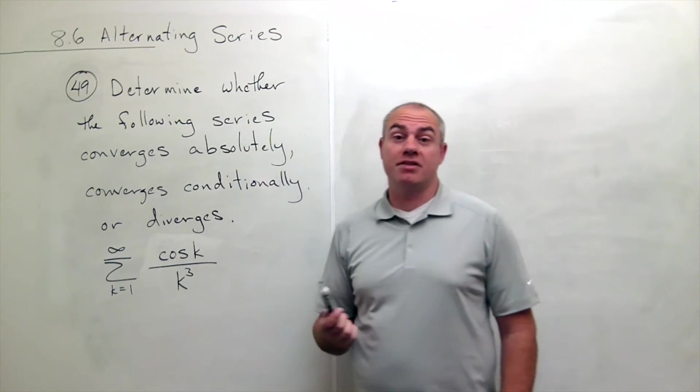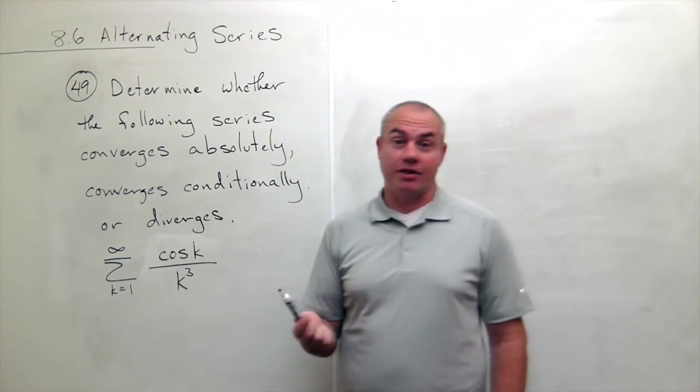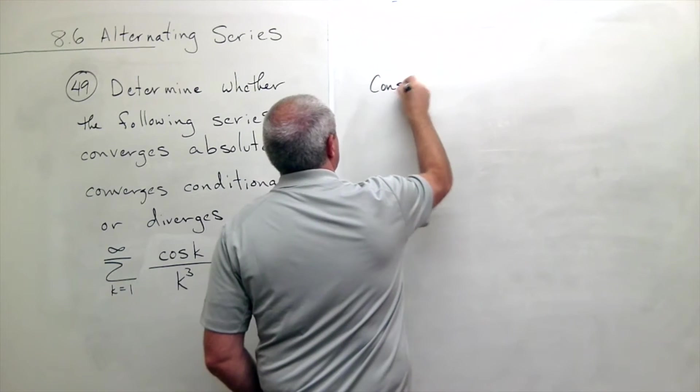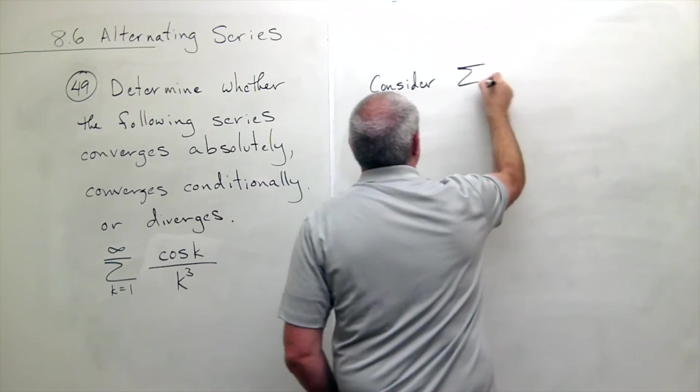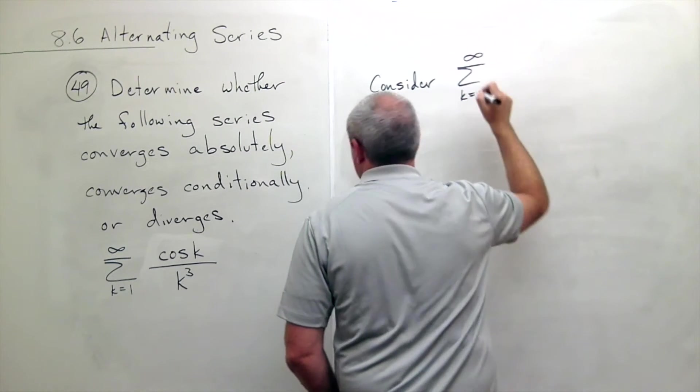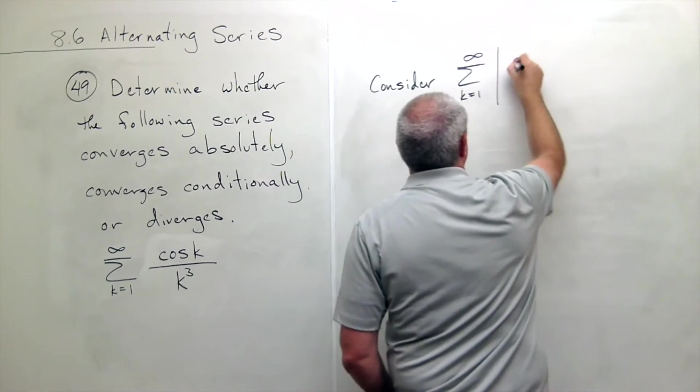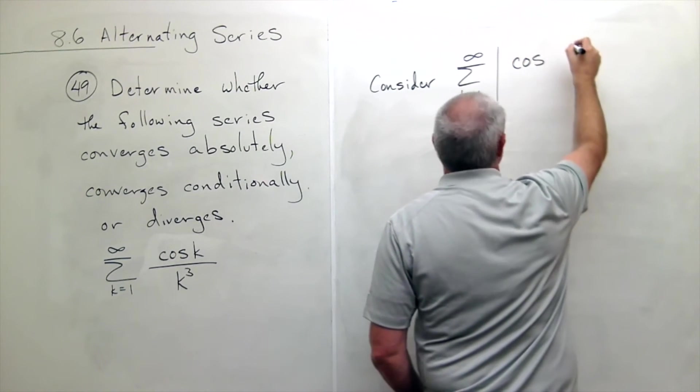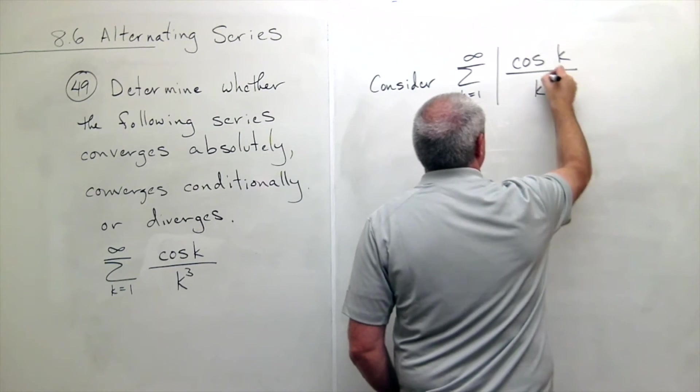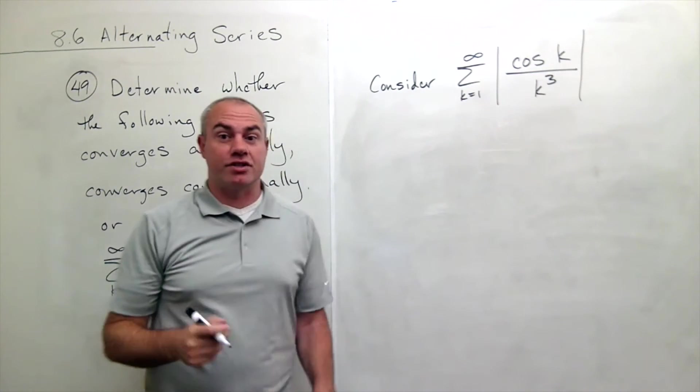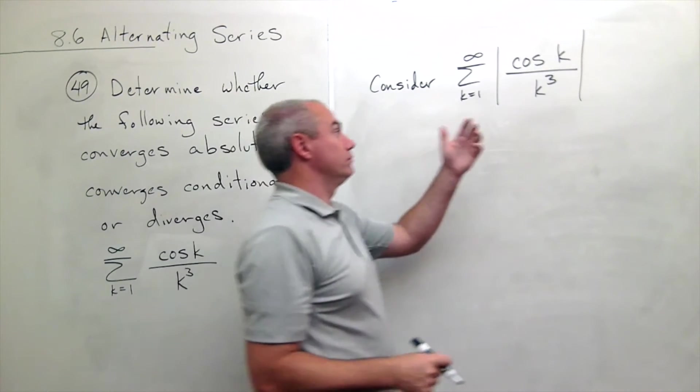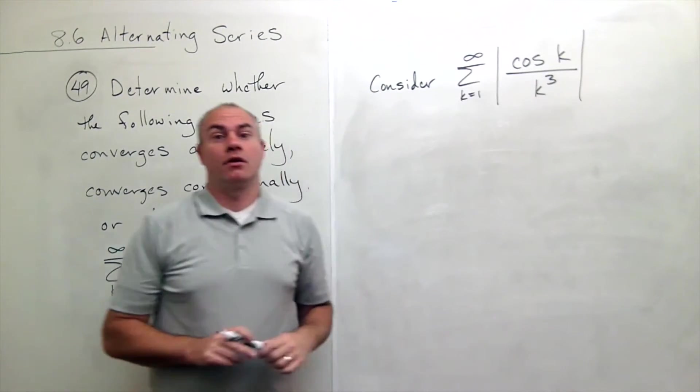But I could make them all positive just by taking the absolute value. So what I'd like to consider is the sum k going from 1 to infinity of the absolute value of cosine of k divided by k cubed. So in some sense, I've just forced everything to be positive.